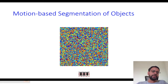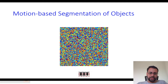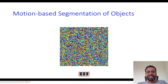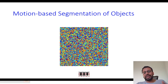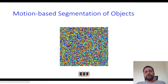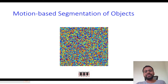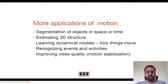Another classical example you will find in many computer vision videos is a moving square within a larger square. The moving square has the same texture as the background, so in a single frame you can hardly see it. But if you have frames over time, you can clearly see an object moving in the middle and segment it. This is a synthetic, tailor-made example to demonstrate why motion estimation is needed.